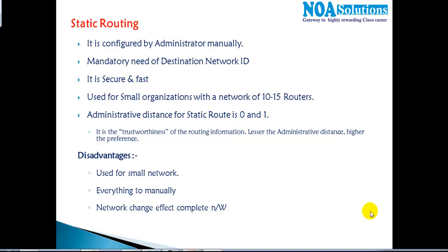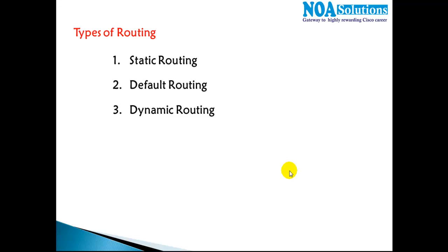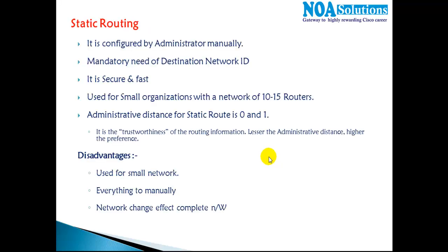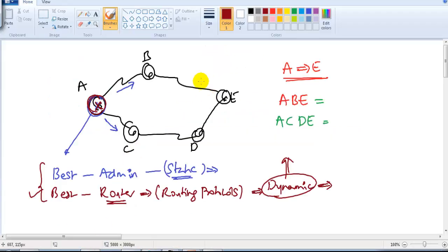In this section we are going to start with static routing before we go to the other types. If you remember in the previous session, we discussed there are three types of routing: static routing, default routing, and dynamic routing. The first kind of routing we are going to learn here will be static. Static routing is manually configured by the administrator.